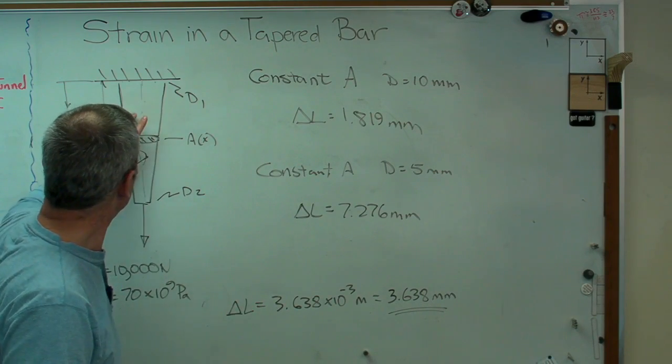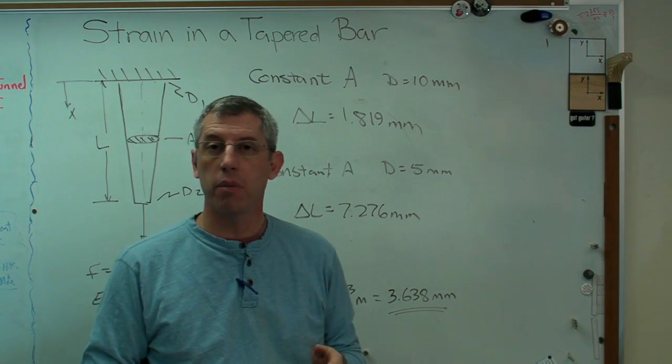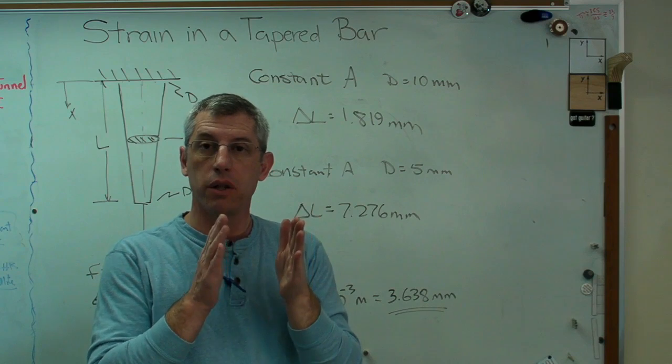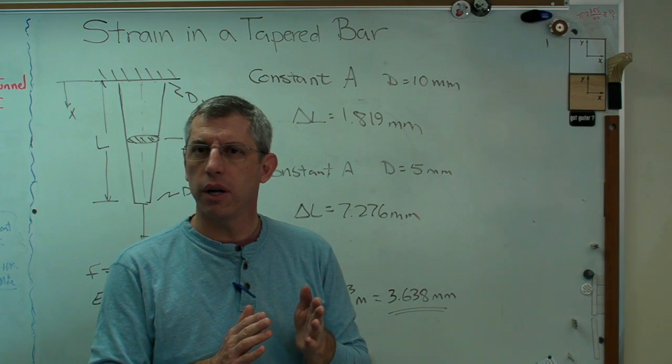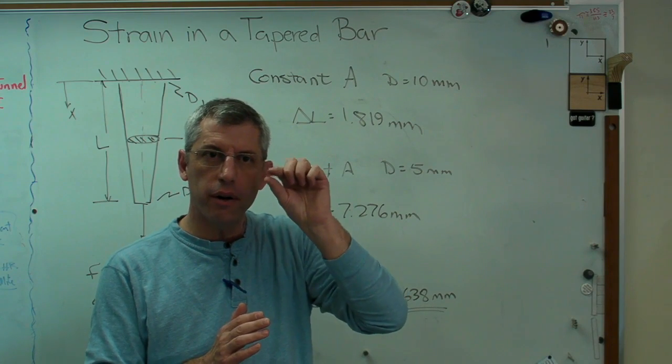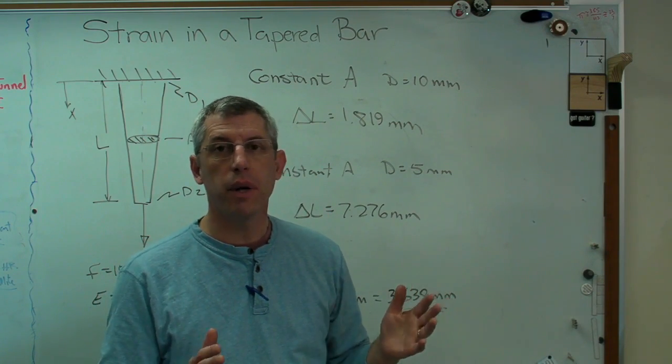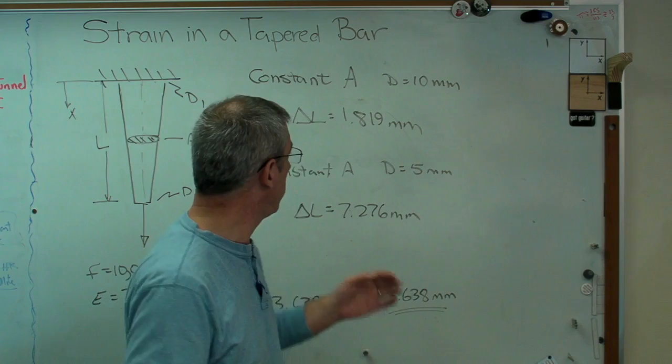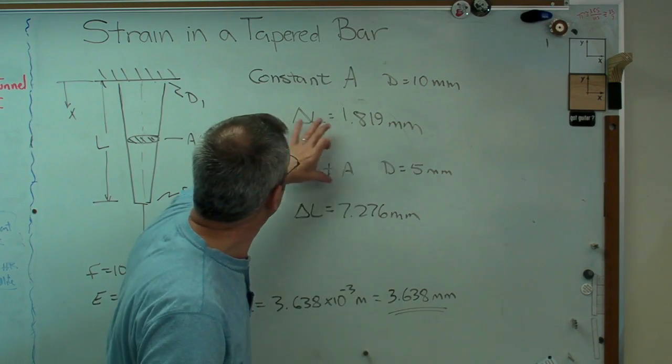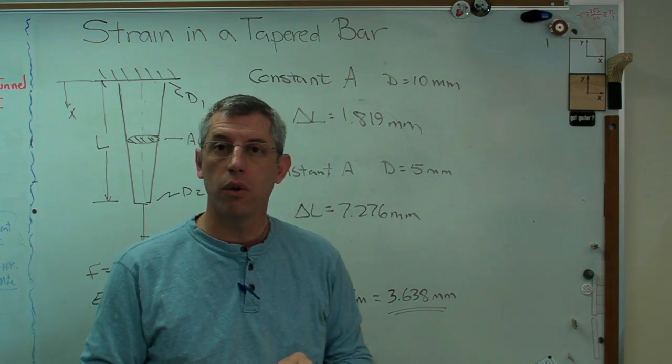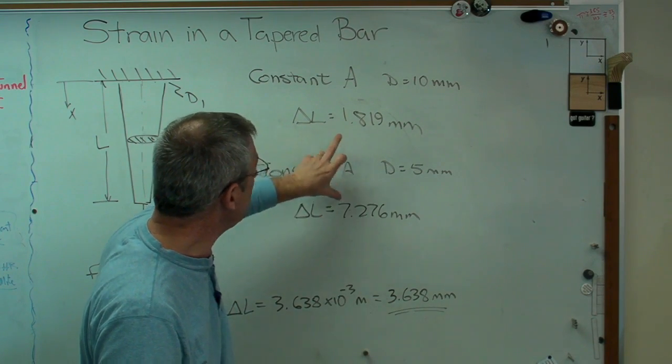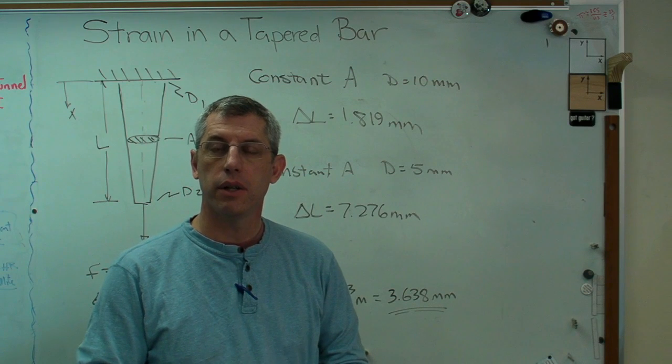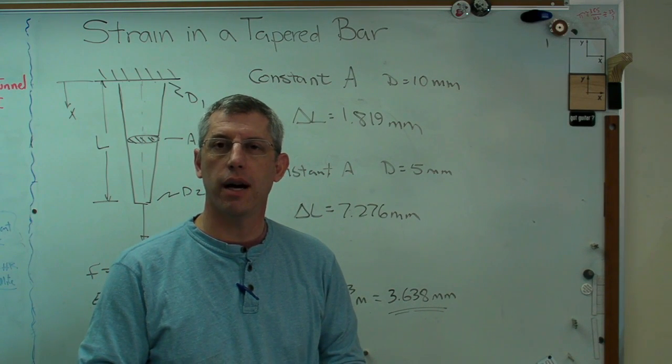So there you go. We've started out by modeling our tapered bar by a series of constant cross-section segments and then said, what if the constant cross-section segments are very, very small and I add up a whole bunch of them, developed an integral, solved that, got this answer, and then did a check to show that this is in between these two extremes, these two possible extremes. Hope this helps and I'll see you next time.